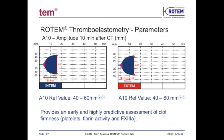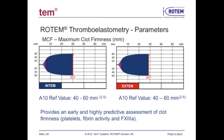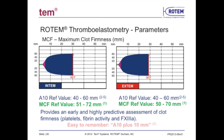The targeted reference range for both Intem and Extem A10 should fall between 40 and 60 mm if the clot is relatively strong and stable. Comparing A10 to MCF, the MCF develops much later — about 15 minutes — than the A10. The reference values associated with normal clot firmness for the MCF are about 10 mm higher than the A10 reference value. Therefore, it may be easier to remember A10 plus 10 as a reliable way to predict the MCF of a clot.